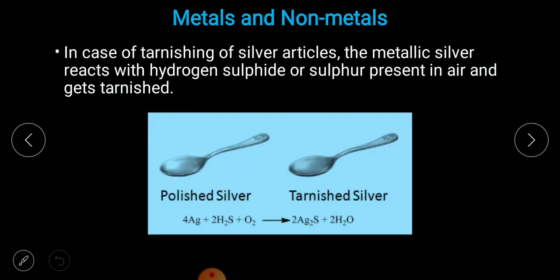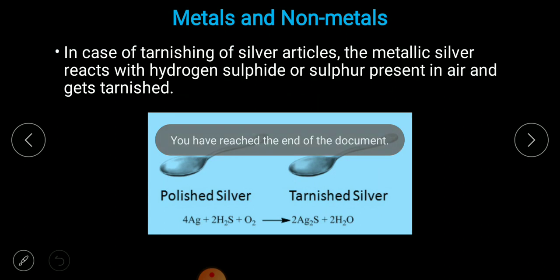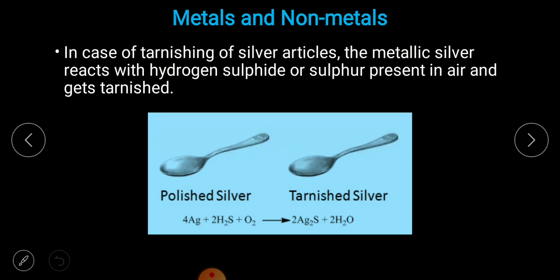In silver ornaments, after some time the surface becomes black. The reason is that silver reacts with hydrogen sulfide or sulfur present in the air to form silver sulfide. So we are done with this chapter. In the next lecture, we will discuss the NCERT problems of this chapter.